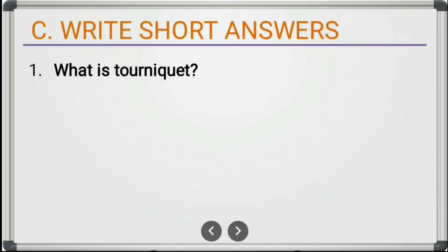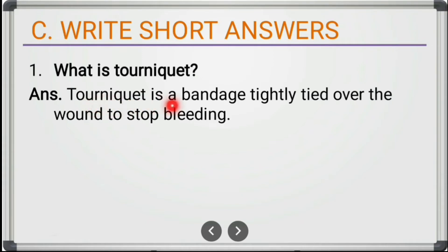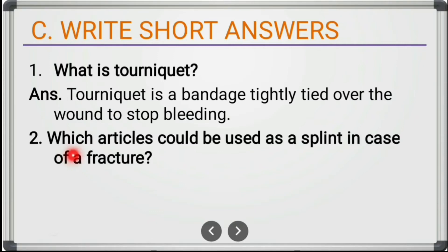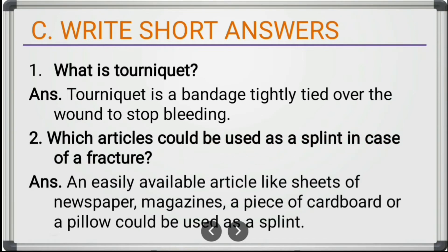Short answer questions. First: what is a tourniquet? A tourniquet is a bandage tightly tied over the wound to stop bleeding. Second: which articles could be used as a splint in a case of fracture? An easily available article like sheets of newspaper, a magazine, a piece of cardboard, or a pillow could be used as a splint to support a fracture.